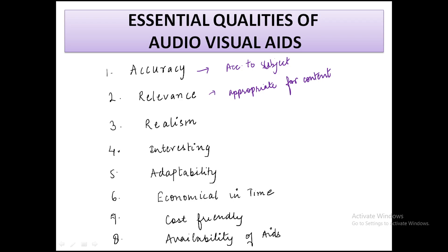The next quality is realism. The audio-visual aid used for explaining a process should be realistic and should represent it one hundred percent. If the audio-visual aid is not realistic, it cannot be considered proper or effective.